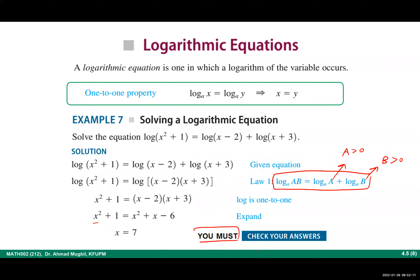When solving a logarithmic equation, you must always check your answer. We check because we need to ensure the argument of every logarithm is positive. If x equals 7: the left side gives log(50), and the right side gives log(5) plus log(10). By the product law, log(5) plus log(10) equals log(50). This is a true statement, so x equals 7 is a valid solution.